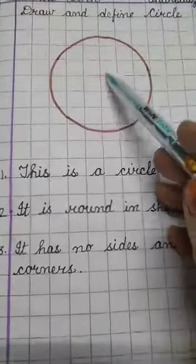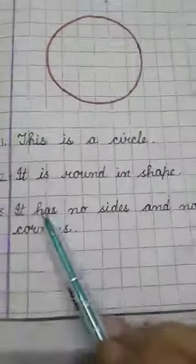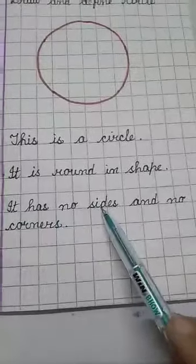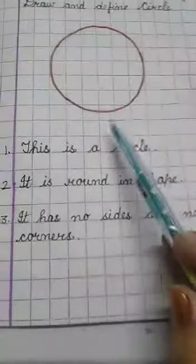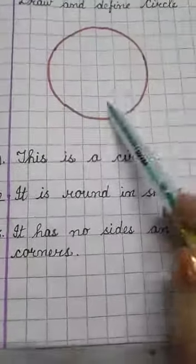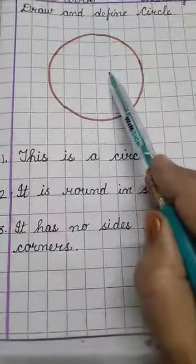So that is a circle. It has no sides and no corners. A circle, as it is round, so it has no side, no corner.